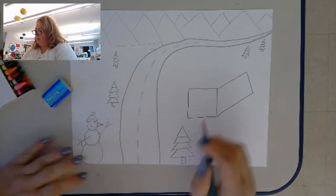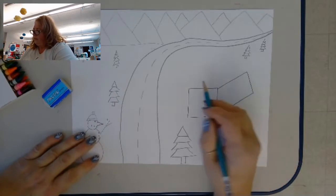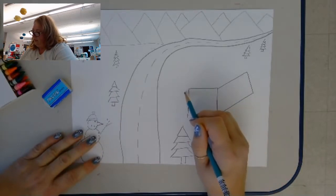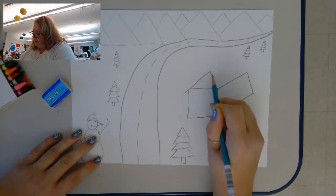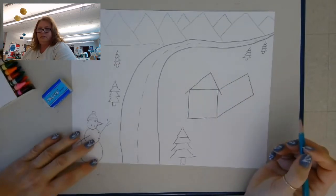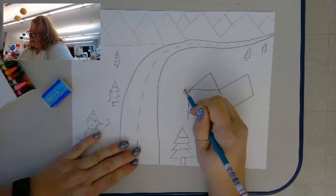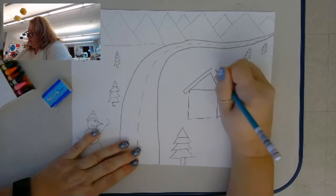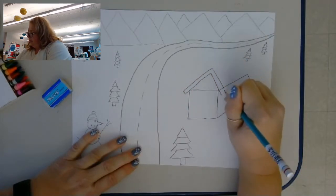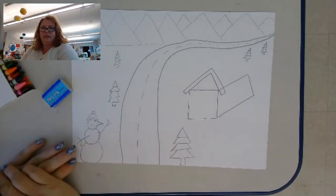So that's the front and the side of the house. Now I'm going to make an upside down V to start the roof, and I'm going to make it twice so it looks like that.